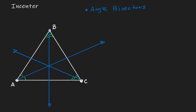Notice that all the points intersect at a location. This is what we define as the incenter of a triangle — the intersection of all angle bisectors.